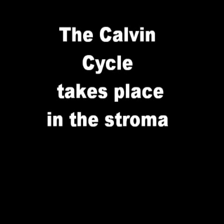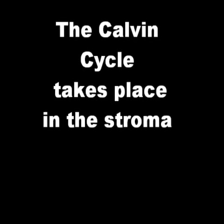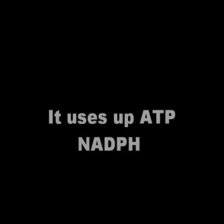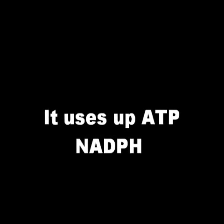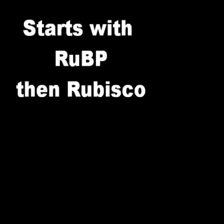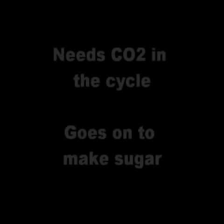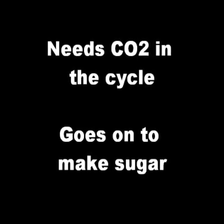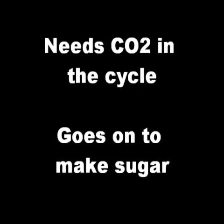We move on to the Calvin Cycle. The Calvin Cycle takes place in the stroma. It uses up ATP and NADPH. Starts with RuBP, then Rubisco needs CO2, and the cycle goes on to make sugar.